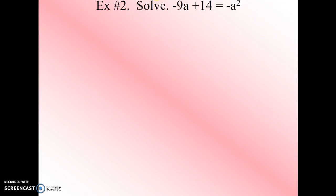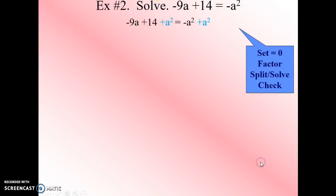Moving on to example 2. Now in this example, we notice that the equation is not equal to 0. So we need to set that equal to 0 first by adding a squared to both sides. Then we want to put it in descending order, so that gives us a squared minus 9a plus 14 equals 0.